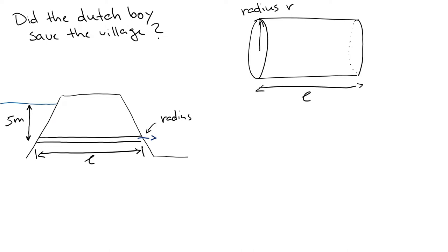In order to establish flow, we need a pressure difference between the pressure going in and the pressure going out. If the pressure going out is less than the pressure going in, we would have flow in this direction.